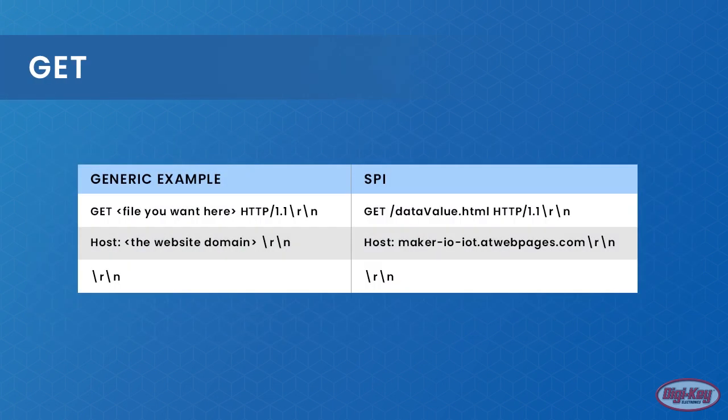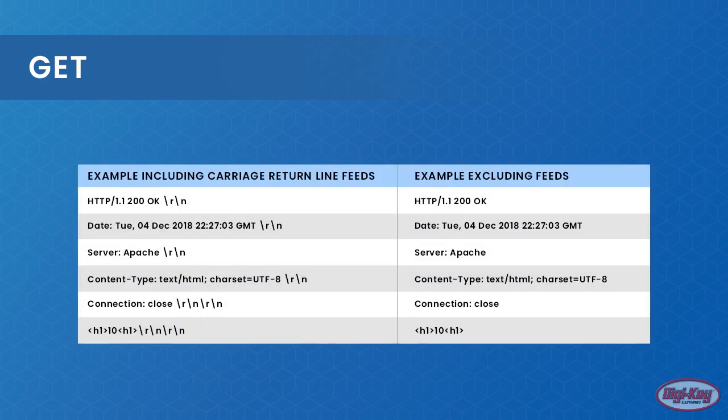Each line in an HTTP message is terminated with a carriage return line feed. The GET command is used to obtain data from a server. In this example of a simple HTTP message, note that the last line is a carriage return line feed immediately after the previous one, which indicates the end of the HTTP message. The response for a typical GET command is shown. You will notice this message has two carriage return line feeds — the first indicating the end of the HTTP server message, and the second indicating the end of the file contents of data_value.html.